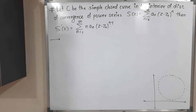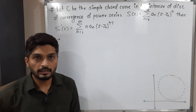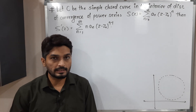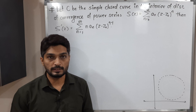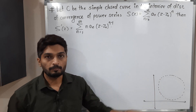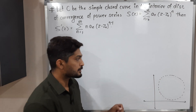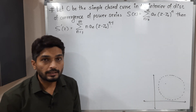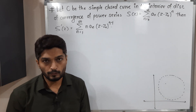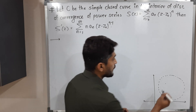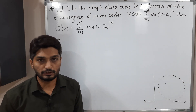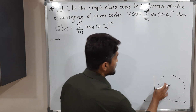In this video we are going to discuss a result concerned with power series. We have this power series and it has some disk of convergence. If you take any point inside the disk, the series is convergent, and if you take any point outside the disk, the series is divergent.